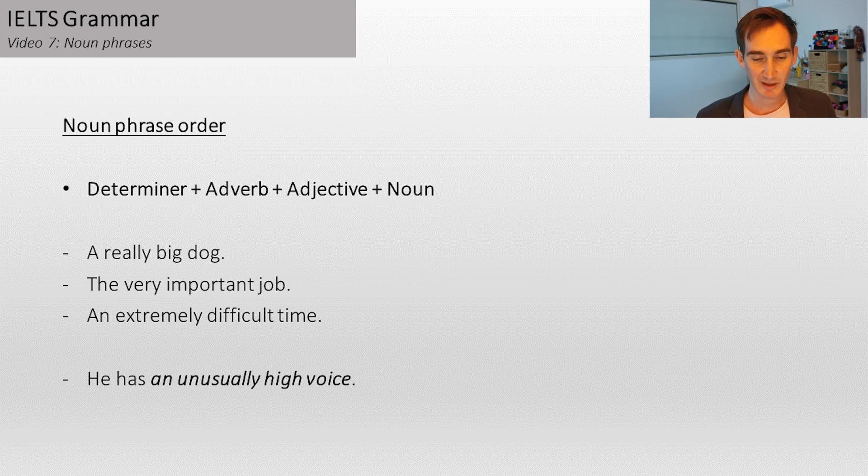For example, you might have the noun phrase, a really big dog. A, determiner. Really adverb describing big, which is the adjective describing dog, which is the noun.